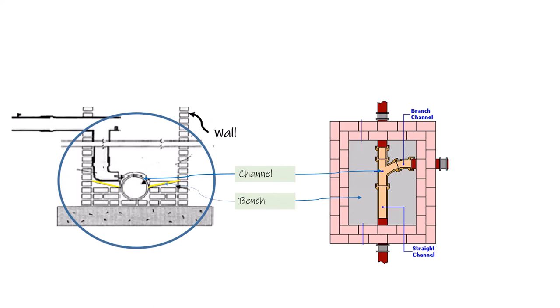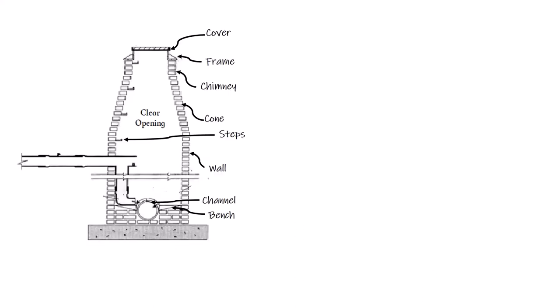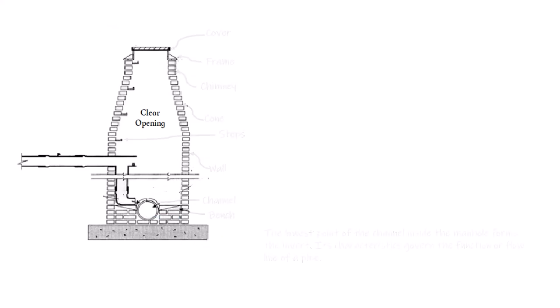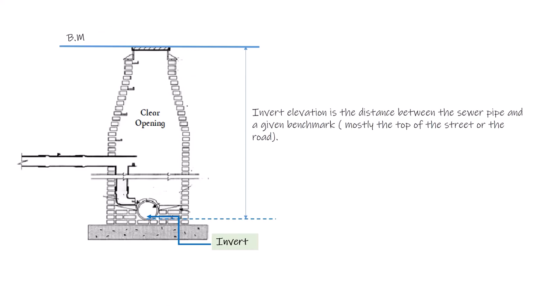Number nine: the invert or bottom of a manhole. The lowest point of the channel inside the manhole forms the invert. Its characteristics govern the flow line of the pipe. Invert elevation is the distance between the sewer pipe and a given benchmark, mostly the top of the street or road, and is measured before installing a sewer pipe.